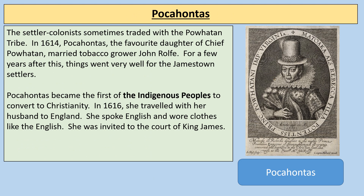You've probably heard of Pocahontas. The settler colonists sometimes traded with the Powhatan tribe. In 1614, Pocahontas, the favourite daughter of Chief Powhatan, married tobacco grower John Rolfe, and for a few years things went very well for the Jamestown settlers. Pocahontas became the first of the indigenous peoples to convert to Christianity. In 1616, she travelled with her husband to England; she spoke English, wore English clothes, and was invited to the court of King James.